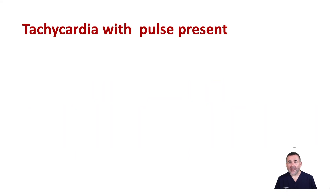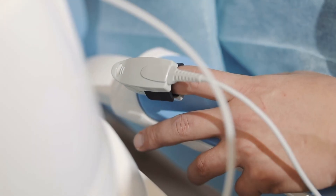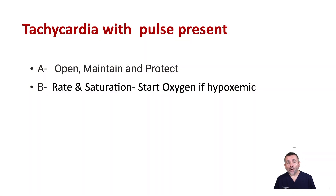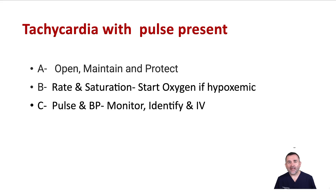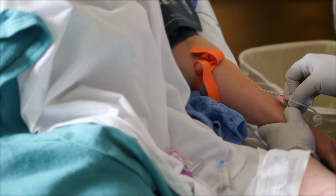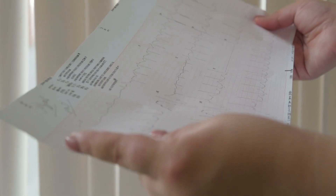If a tachycardia and a pulse are present, ensure that the airway is opened, maintained, and protected. Check the breathing rates and saturation, and if hypoxemic, provide oxygen or assist breathing as necessary. Check the heart rate and blood pressure, get the monitor on, identify the rhythm, and get IV access and do a 12-lead ECG if available.